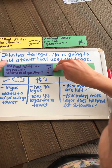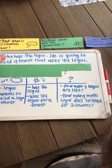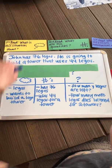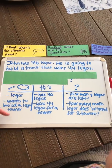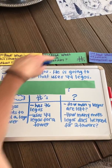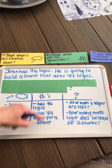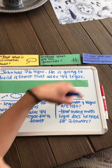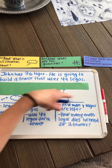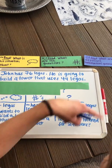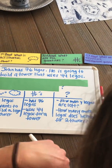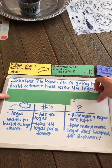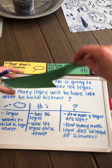So I've read this problem three different times. The first time I looked to see what it is about. The second time I looked at the quantities in the situation. And the third time I brainstormed what kind of questions they might ask me about this situation. Now let's solve the problem.